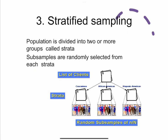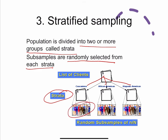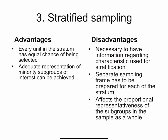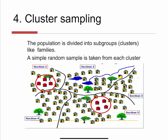The steps for stratified random sampling are: select the study population, calculate the sample size, identify the relevant strata whose units share at least one characteristic, prepare the sampling frame for each stratum, then follow simple random or systematic random sampling from each stratum. For example, dividing a list of clients by ethnicity into groups and randomly selecting participants from each ethnic stratum. Advantages: every unit in the stratum has equal chance of selection and adequate representation of minority subgroups. Disadvantages: information regarding stratification characteristics is required, a separate sampling frame must be prepared for each stratum, and it can affect proportional representativeness.